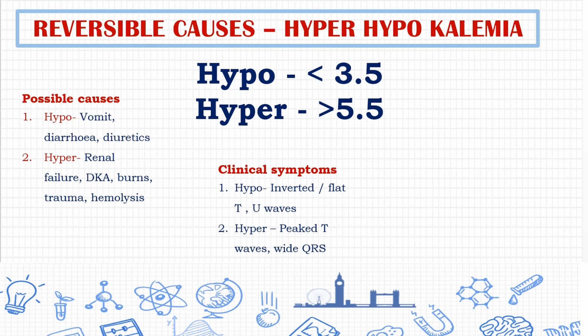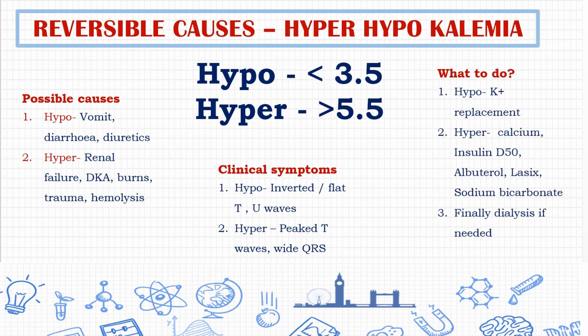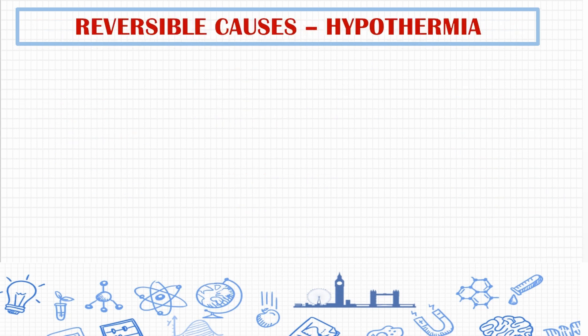ECG changes in hypokalemia are typically seen when potassium is less than 2.7 mmol/L. For hypokalemia, immediately consider potassium replacement. For hyperkalemia, consider calcium to protect the cardiac muscle, insulin with 50% dextrose to drive potassium back into the cells, and other drugs such as albuterol, furosemide, and sodium bicarbonate. Dialysis may also be considered if needed.